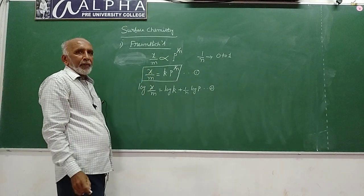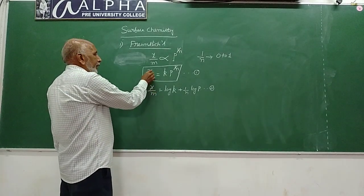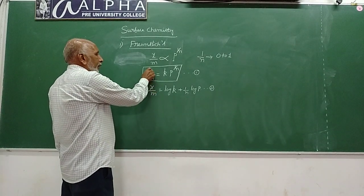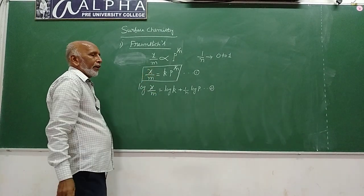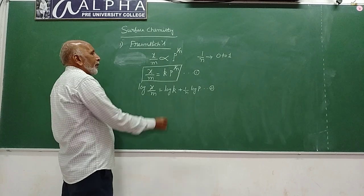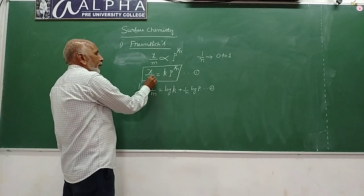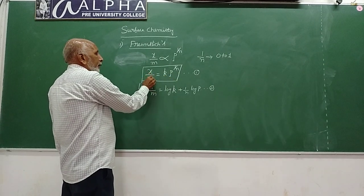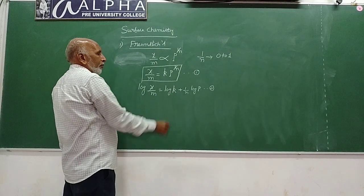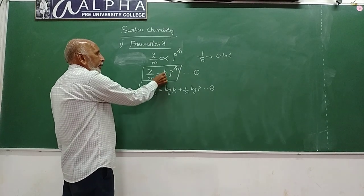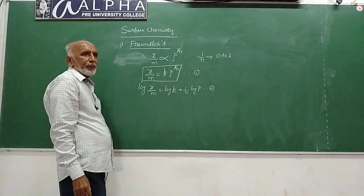Here x by m is the rate of adsorption — you can vary the amount of adsorbate and adsorbent, and you can also vary the pressure. So x by m is a variable, p is also variable, while k is a constant.